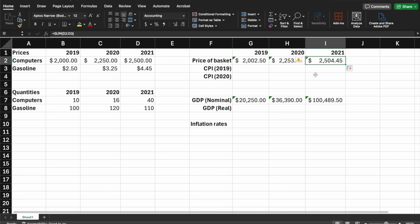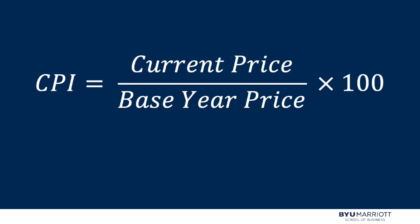Now we want to compare how much the price of this basket has gone up over time. To calculate CPI, we use an index score: take the current price, divide it by whichever year we choose as the base year, and multiply by 100. We can choose whichever base year is most helpful. Importantly, the base year will always end up as a score of 100, because it's the current price divided by itself times 100.